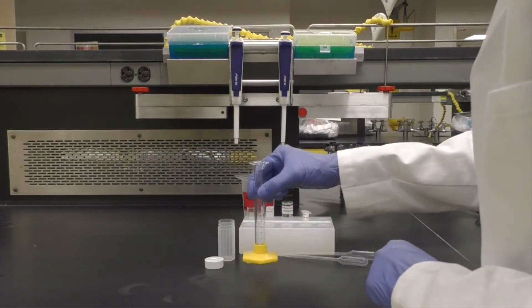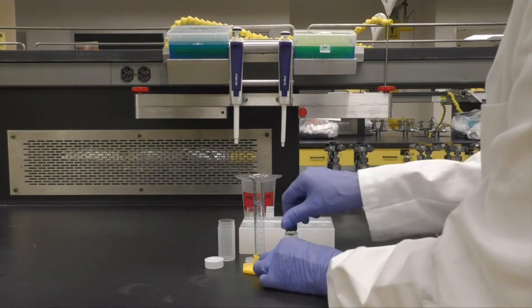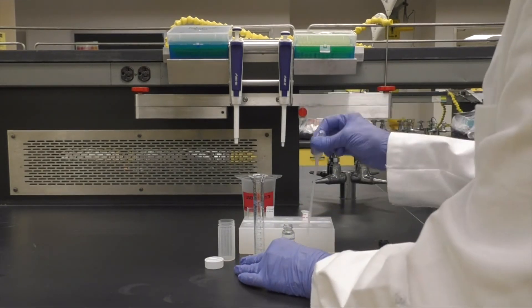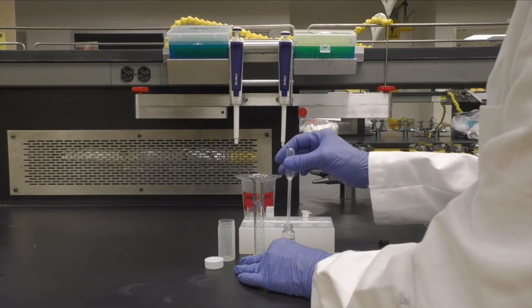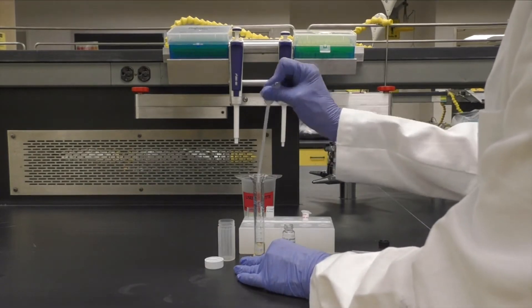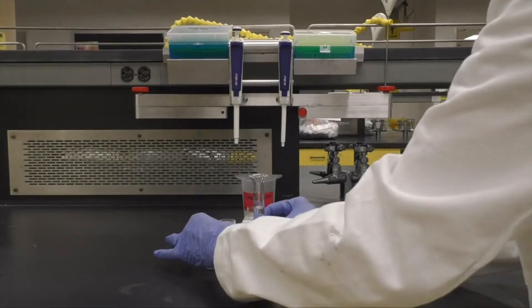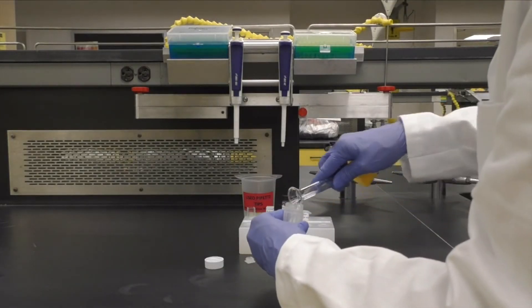You are now ready to prepare your sample. Measure out 9.8 milliliters of the buffer using the 10-mil graduated cylinder. Pour that into the 20-mil plastic vial.